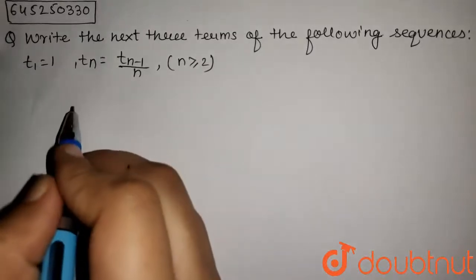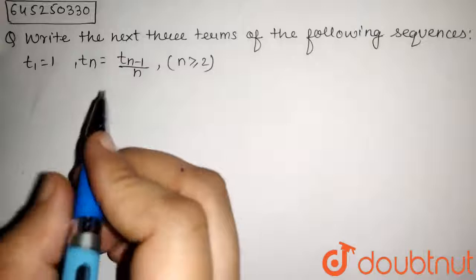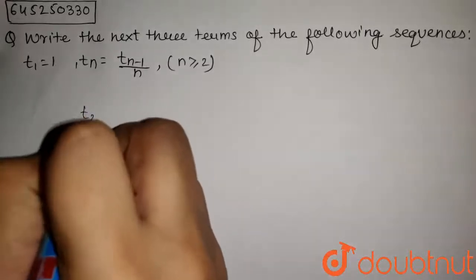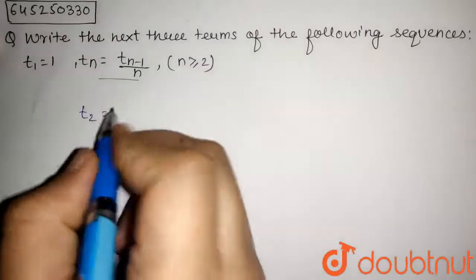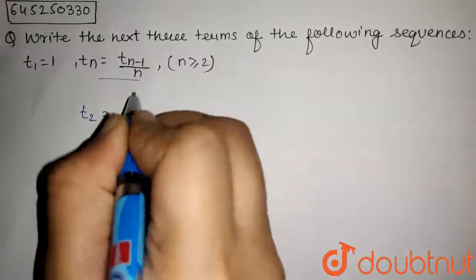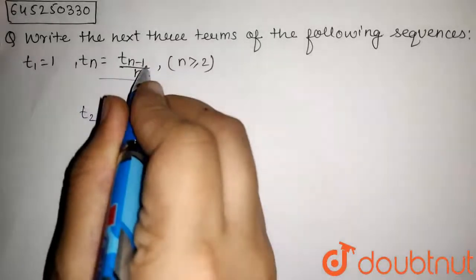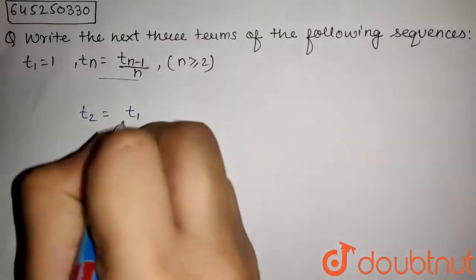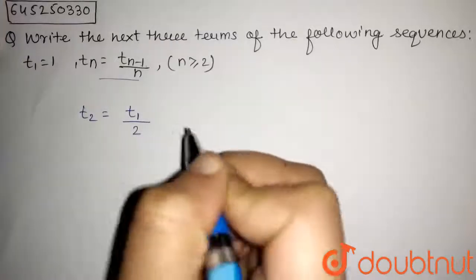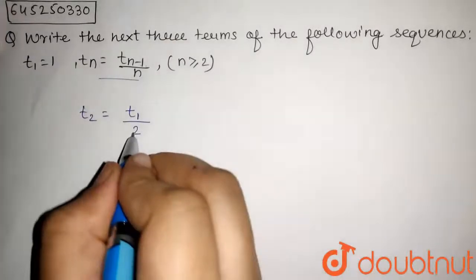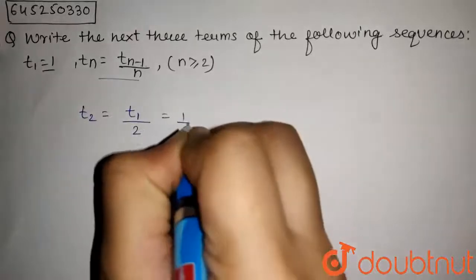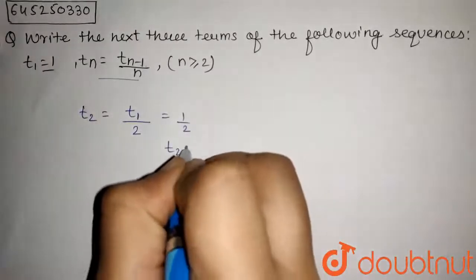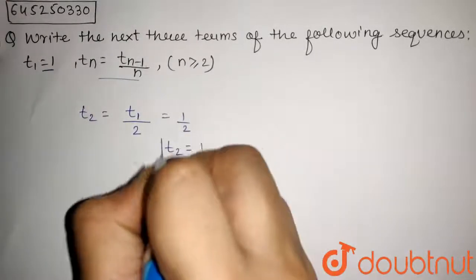T1 is given, so we have to find the second, third, and fourth term. The second term T2 can be found out by putting n equals 2 in this. So we get T2 equals Tn minus 1, that is 2 minus 1 which will be 1, so T1 upon n that is 2. So T2 will be T1 upon 2, and this T1 is given as 1, so this will be 1 by 2. So T2, the second term, is equal to 1 by 2.